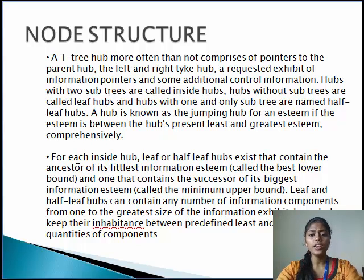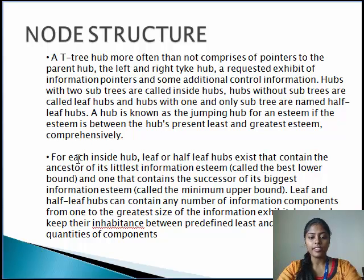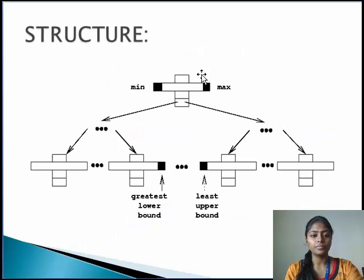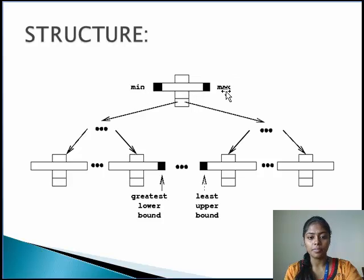For example, for each internal node, a leaf or half-leaf node exists that contains the predecessor of its smallest data value, called the greatest lower bound, and one that contains the successor of its largest data value, called the minimum upper bound. Leaf and half-leaf nodes can contain any number of data elements from one to the maximum size of the data array. Inner nodes keep their occupants between a minimum and maximum number of elements. The structure of the T-tree has the left-hand side as the minimum value and the right-hand side as the maximum value, where this is the greatest lower bound and this is the least upper bound. This is the model structure of the T-tree.